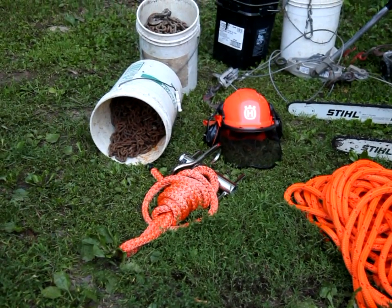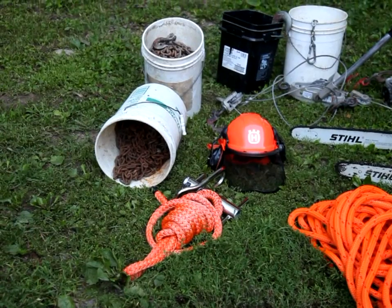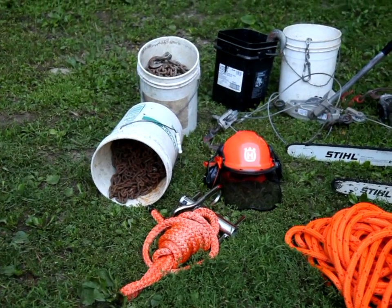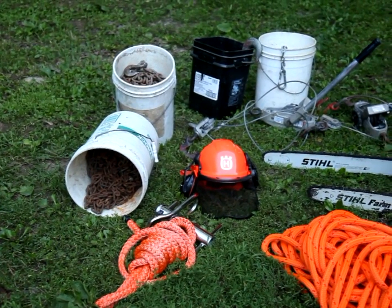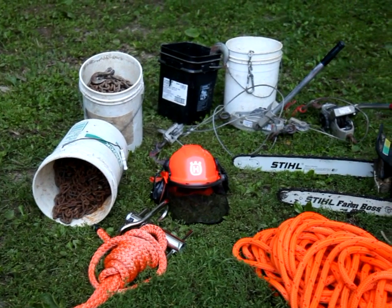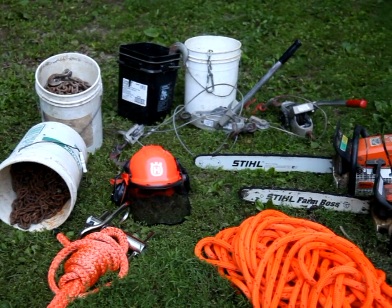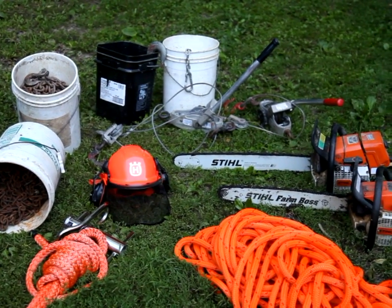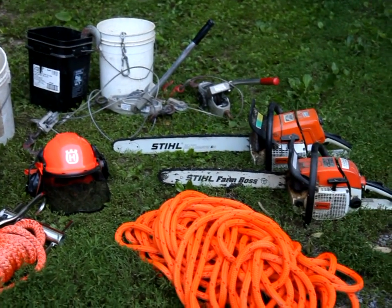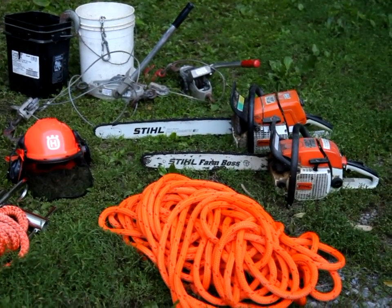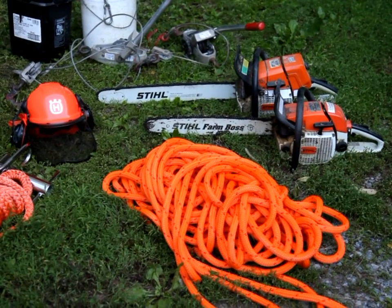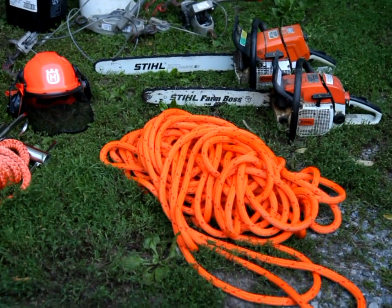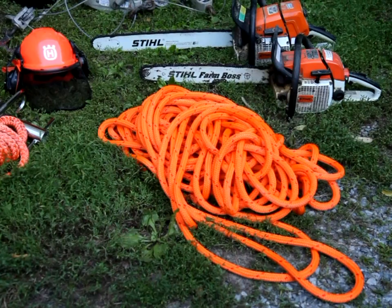This video only covers the third removal method, which consists of pulling the tree back to vertical and then past vertical to fall in the desired location. The equipment required includes one or two porter wraps, around 200 pounds of heavy chain, a couple of cable winches, at least one large saw, and a heavy rigging line.